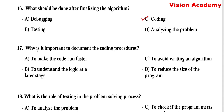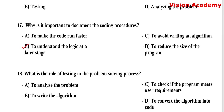Question number 17: Why is it important to document the coding procedures? Option A, to make the code run faster. Option B, to understand the logic at a later stage. Option C, to avoid writing an algorithm. Option D, to reduce the size of the program. Here, option B, to understand the logic at a later stage, is the right answer.